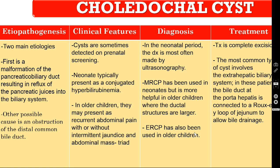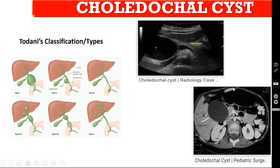For treatment, the cyst must be completely excised. The most common type involves the extrahepatic biliary system; after excision, the bile duct at the porta hepatis is connected to a Roux loop of jejunum — hepaticojejunostomy — to allow bile drainage.